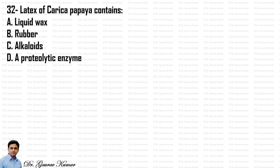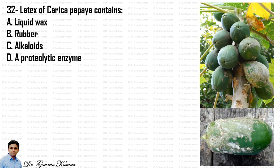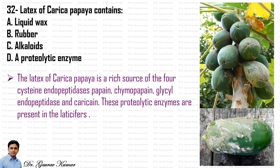The next question asks what the latex of Carica papaya contains. The latex of Carica papaya is a rich source of four cysteine endopeptidases: papain, chymopapain, glycyl endopeptidase, and caricain. These proteolytic enzymes are present in the laticifers. So the answer is that latex of Carica papaya contains proteolytic enzymes — specifically four of them.